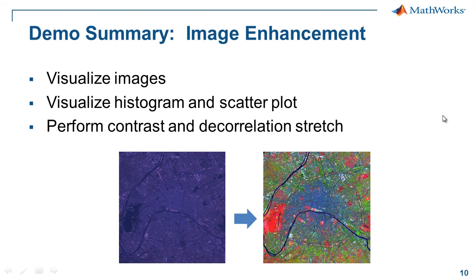To summarize our image enhancement example: we were able to visualize images, look at histograms and scatter plots to analyze problems, and then do performance enhancement like contrast stretch and decorrelation stretch. We essentially moved from a poorly illustrated all-purple image to a nice dynamic image with lots of shades of color and correct contrast.